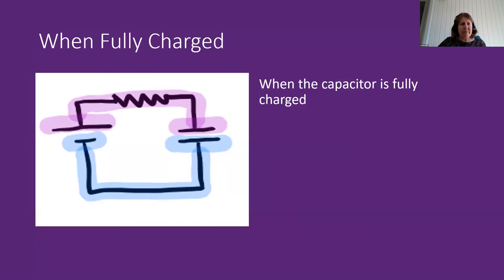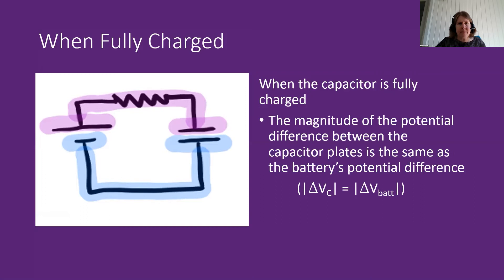When the capacitor is fully charged, the potential difference across the capacitor equals the potential difference of the battery. There is no current in the circuit, so there is no potential difference across the resistor — all of the resistor appears as the same color in our color-coded representation.